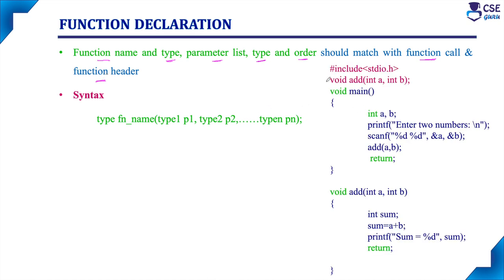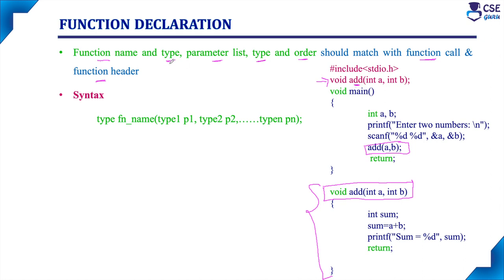For example, this is the function declaration, this is the function call, and this is the function header — the complete thing being the function definition. The function name here is 'add', and the return type is void, which is specified in both the function declaration and the function header.